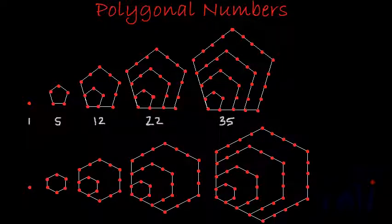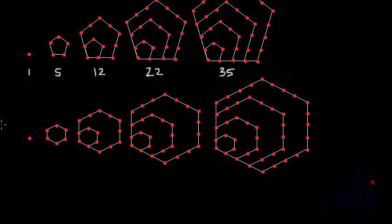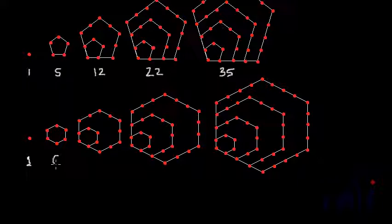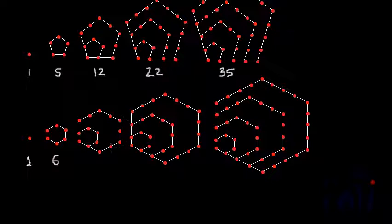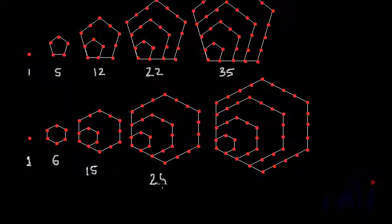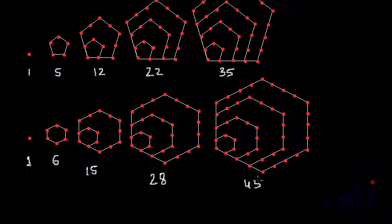For hexagonal numbers, the first is 1, the second is 6, the third is 15, the fourth is 28, and the fifth is 45. In the next video, we will derive a formula to find the nth polygonal number.